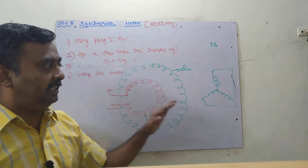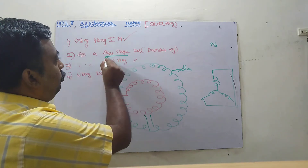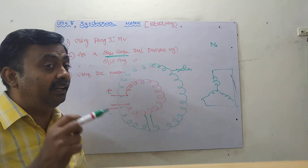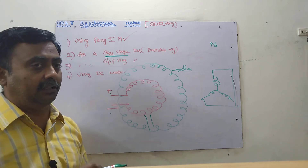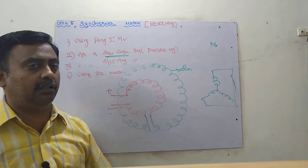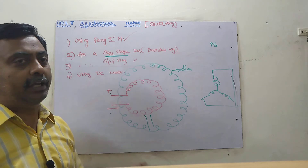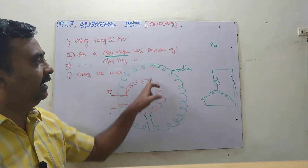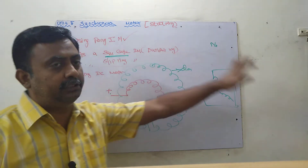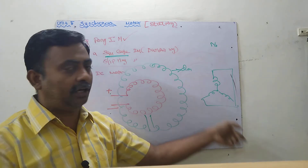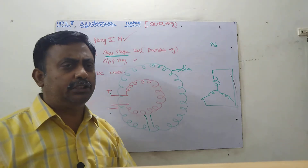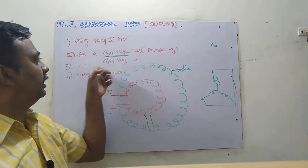The main drawback of the damper winding method is that it starts as a squirrel cage induction motor, which draws very heavy starting current. Therefore, starters are needed — either an auto-transformer starter or a star-delta starter must be used. This is the second starting method.